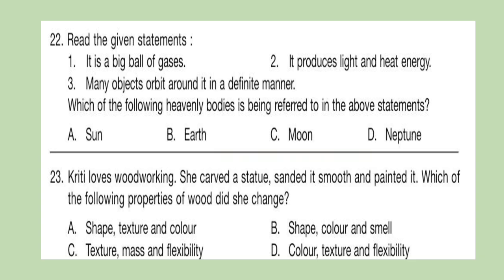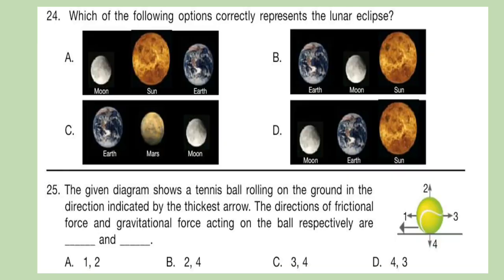Question 23: Kriti loves woodworking. She carved a statue, sanded it smooth and painted it. Which of the following properties of wood did she change? Question 24: Which of the following options correctly represents the lunar eclipse? Look at the pictures carefully and choose your answer.